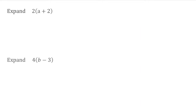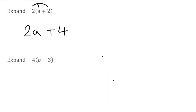For our first example we have 2(A+2). That means I'm going to multiply all the terms inside the bracket by 2. We've got 2 multiplied by A, which is 2A. And then 2 multiplied by positive 2, which is positive 4, so plus 4. The final expression for that expanded bracket will be 2A plus 4.